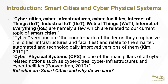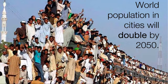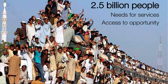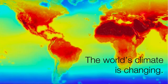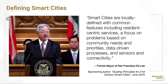But what are smart cities, and why do we care? Broadly speaking, there are some big changes in the world — not just the view from Silicon Valley of tech innovation giants. The world population living in cities is predicted to double by the United Nations by 2050 — that's 2.5 billion more human beings — and they all have needs for services and access to opportunity. At the same time, the world's climate is changing. So how do we want to live in that world? Smart cities are part of the answer. How do you define smart cities? This is a quote from San Francisco's former mayor Ed Lee: smart cities are a locally defined idea with common features including resident-centric services, focus on problems based on community needs and priorities, data-driven processes, and sensors and connectivity.